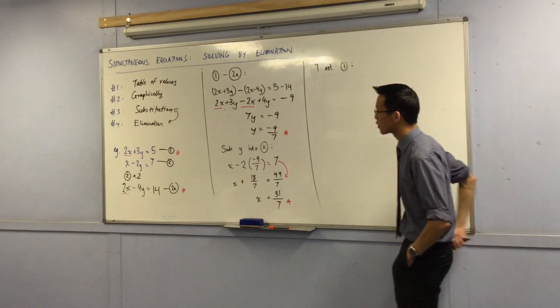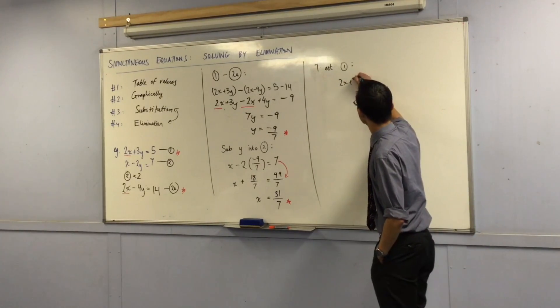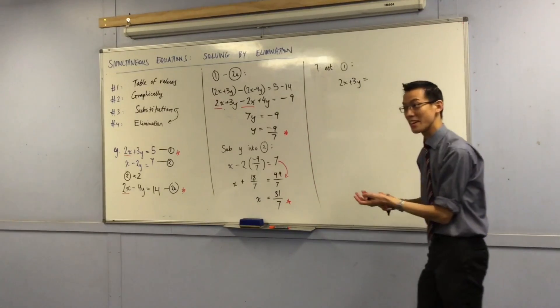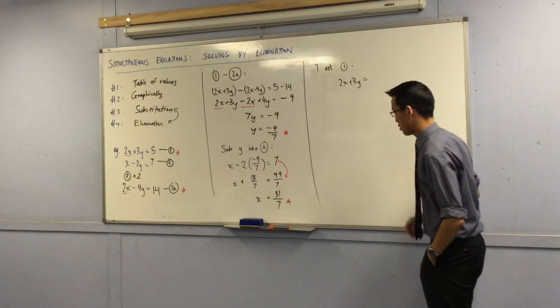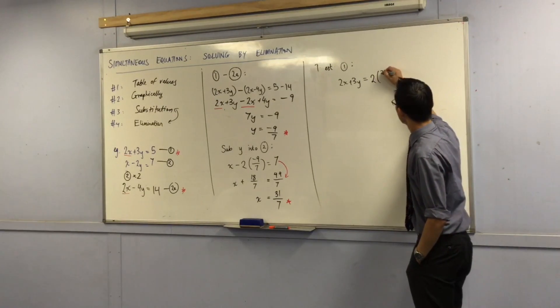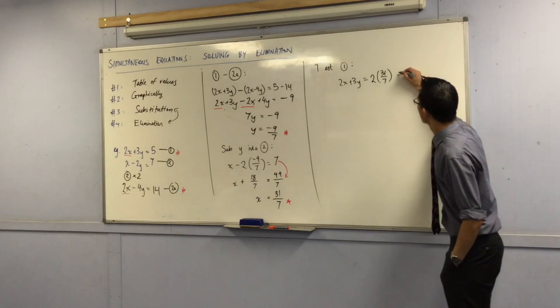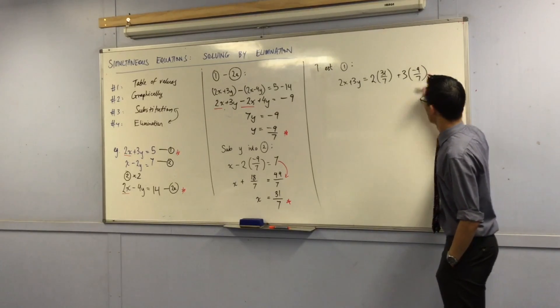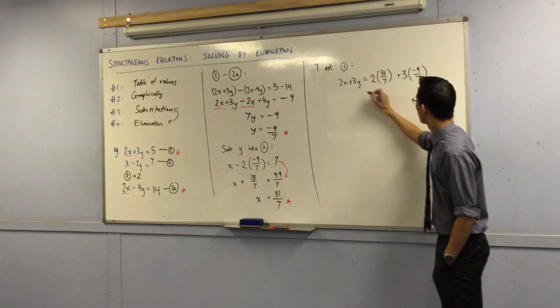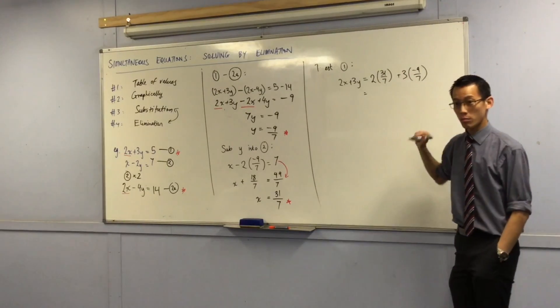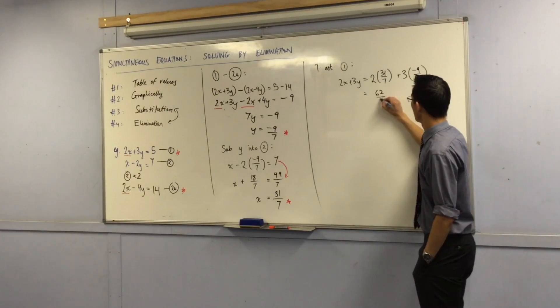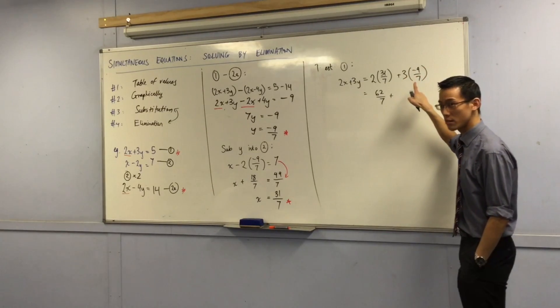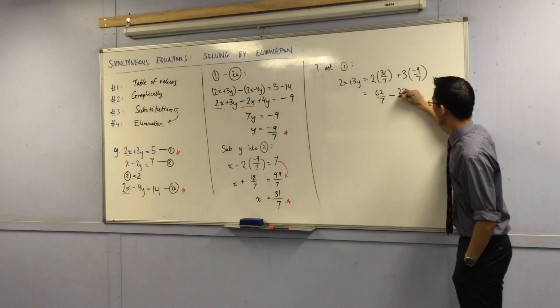All right, so on the left-hand side, I've got 2x plus 3y, right? So, 2x plus 3y, and now I'm going to take what I think x is and what I think y is, and let's see what happens. 2x, that's 2 times this, plus 3 times this. How does my substitution look? Happy with it? 2 times 31. 62. 62. 3 and negative 9. That should be minus 27, shouldn't it? Yep.